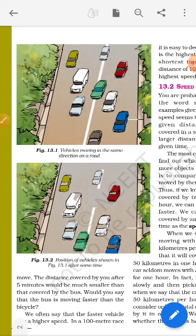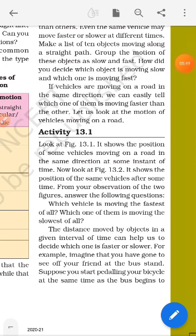So position of vehicles do not remain the same. Some vehicles may be faster and some are slower. So how you can say which one of them is moving slower or faster?